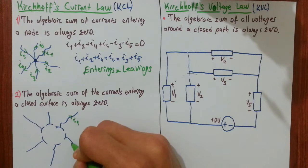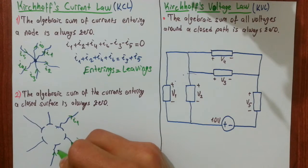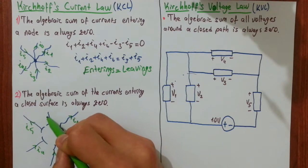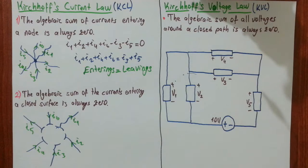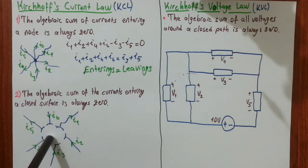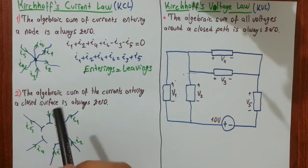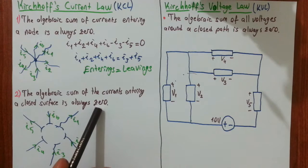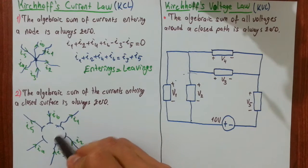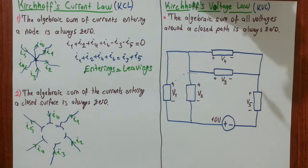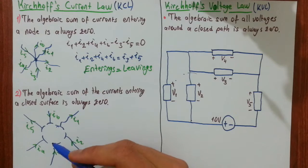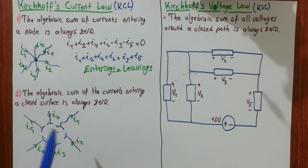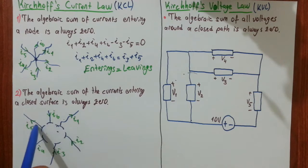Let's label them: I1, I2, I3, I4, I5, and I6. You don't need to worry about what is included inside this surface. KCL says the algebraic sum of the currents entering a closed surface is always zero — you only need to worry about the branches crossing the surface boundary.